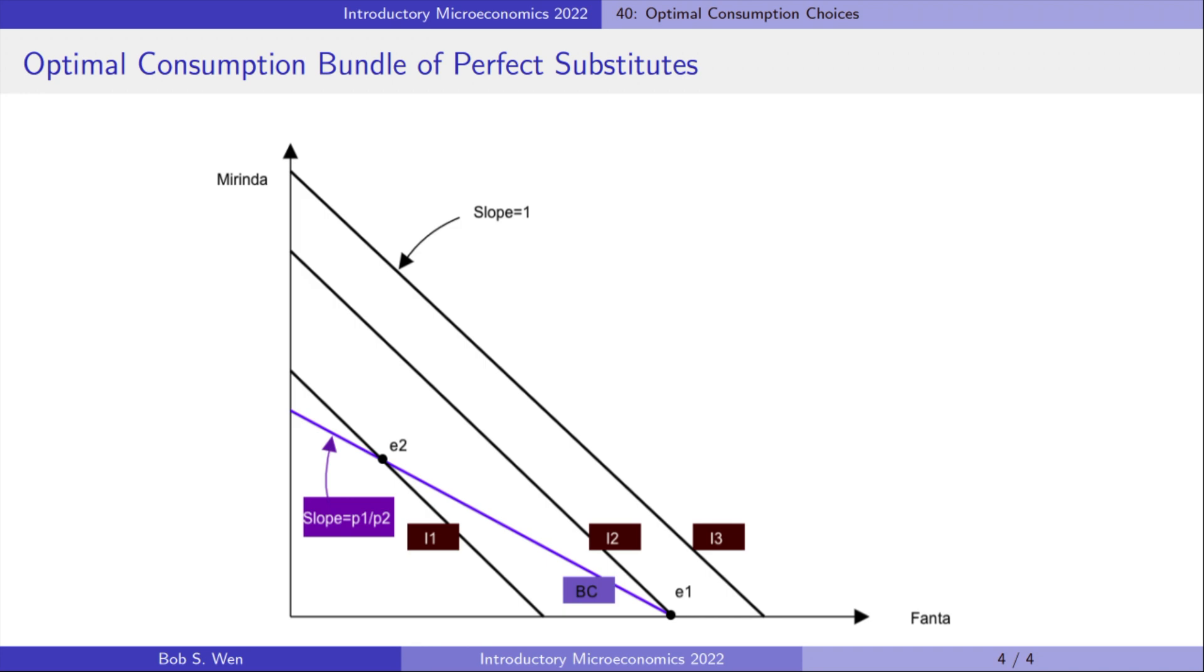She spends all her income on Fanta. The consumer is indifferent between Fanta and Marinda. So she buys the one at a lower price.